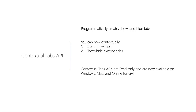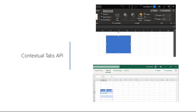With contextual tabs, you can create new tabs and show or hide existing tabs on the ribbon. This functionality was already in preview for Excel on Windows and online, and we just finished development for Mac, so we now have availability across all platforms — though this is only for the Excel application. A great example is that when you add shapes to Excel and click on one, a shape format tab appears in the ribbon. Now you can do similar things with your add-in, adding your own contextual tabs based on user context.